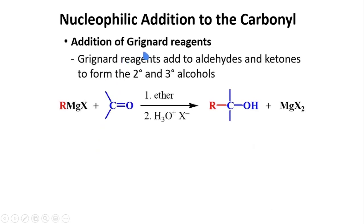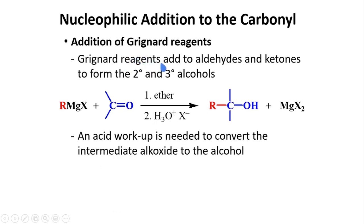Grignard reagents are also known to react with the carbonyl carbon by nucleophilic addition. Grignard reagents add to aldehydes and ketones to form secondary and tertiary alcohols. This R group, negatively charged, can attack this carbon, and upon protonation will give you an alcohol. An aldehyde will give a secondary alcohol and a ketone will give a tertiary alcohol. You need an acid workup to convert the intermediate alkoxide to the alcohol.